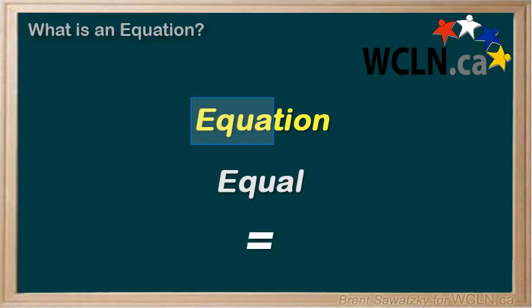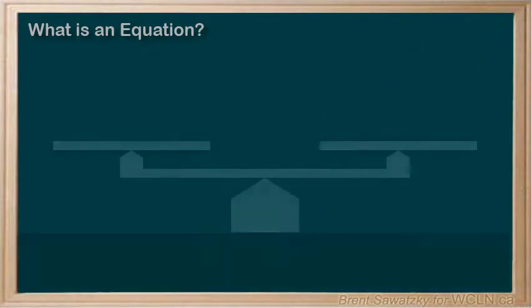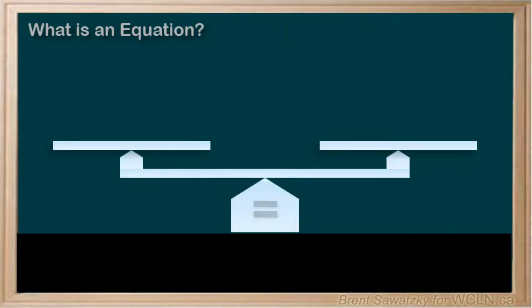The equal sign separates two equal sides, the left of the equal sign and the right of the equal sign. Much like a balance scale. To stay balanced, we need to ensure that the left side is equal to the right side.